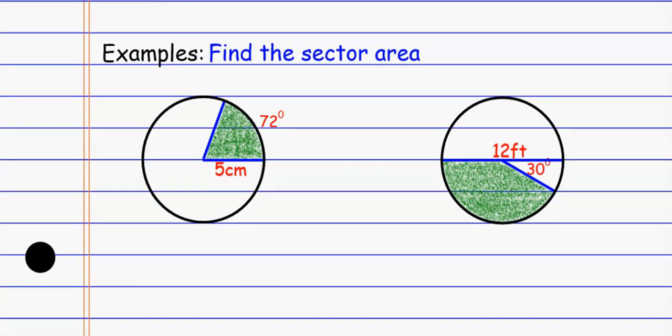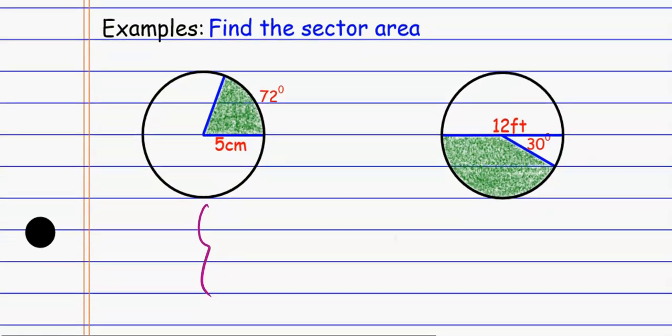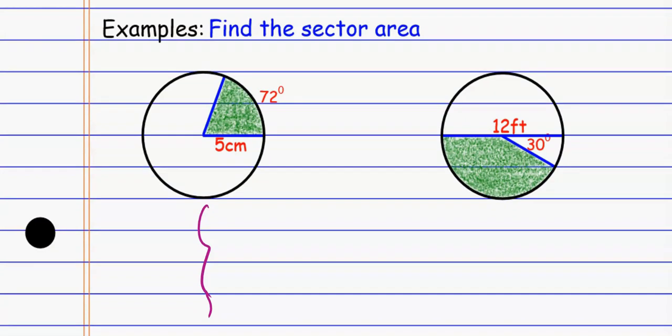For example, I want to find the sector area — the region shaded in green. There are two ways to do this. I can think of it in terms of a fraction of the whole thing. For this one, the entire area is πr² — so that would be 25π. That's the area of the entire circle.